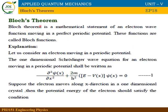The solution resulting from Bloch's theorem is called the Bloch function. For an electron traveling through a periodic potential, we start with the time-independent Schrödinger equation: d²ψ/dx² + (2m/ħ²)(E − V(x))ψ = 0. This is equation number 1.